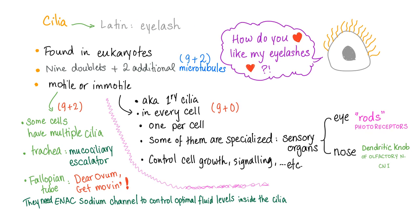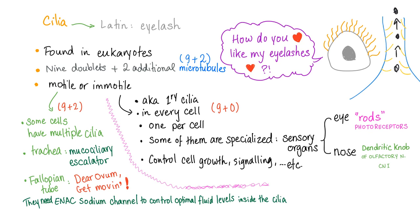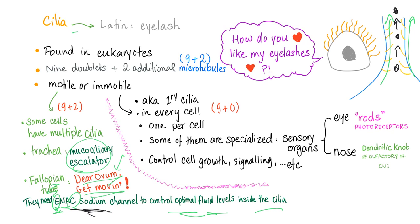Cilia — Latin for eyelash — are found in eukaryotes. They have nine doublets plus two central single microtubules, called the 9+2 arrangement. They can be motile or immotile. Motile cilia are found in cells such as the trachea, which has the mucociliary escalator — cilia push mucus or foreign bodies upward until they exit the body. The fallopian tube also has cilia to push the ovum. Epithelial sodium channels are needed to control optimal fluid levels around the cilia.